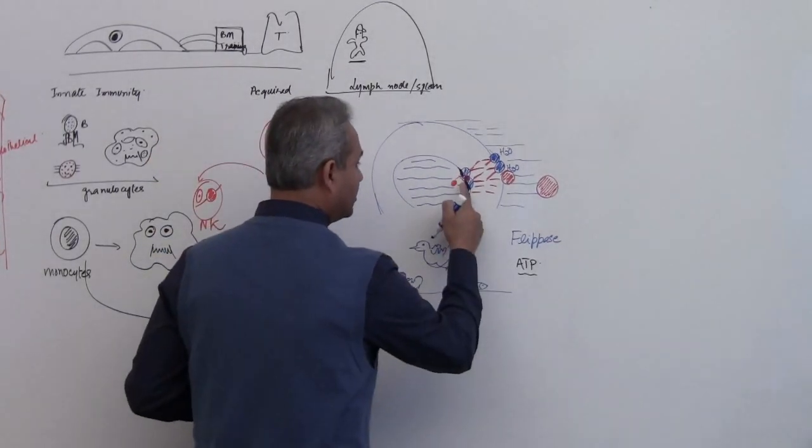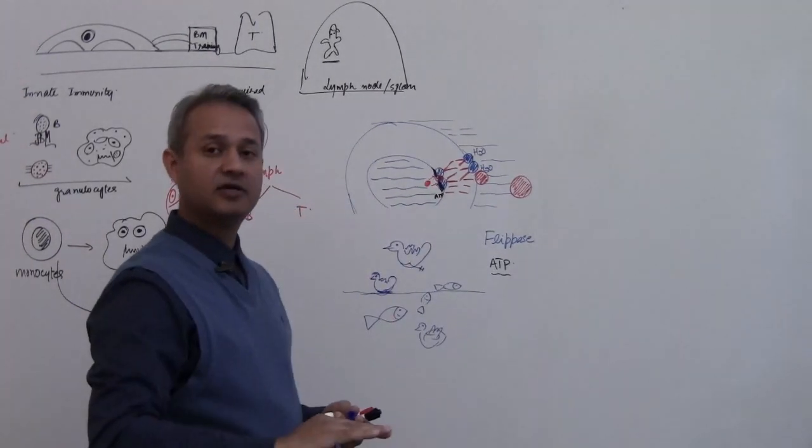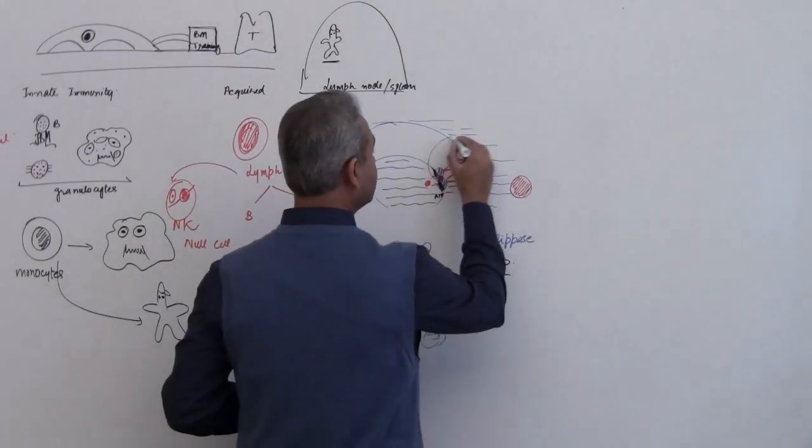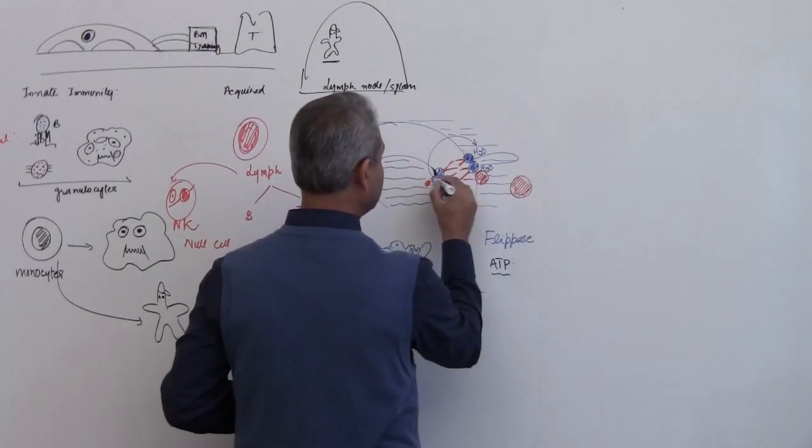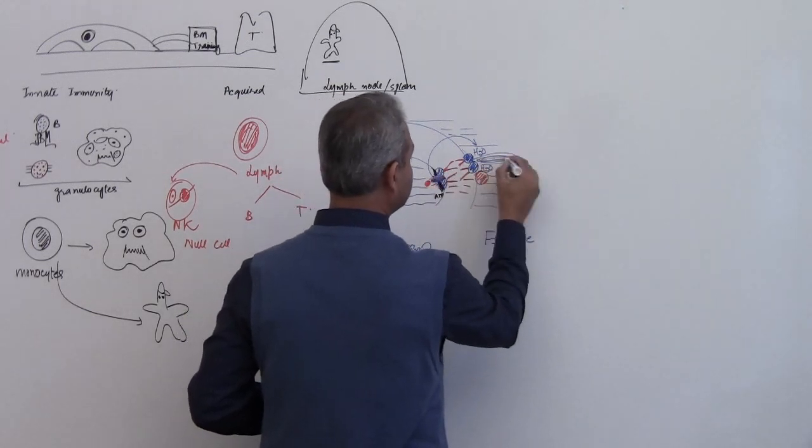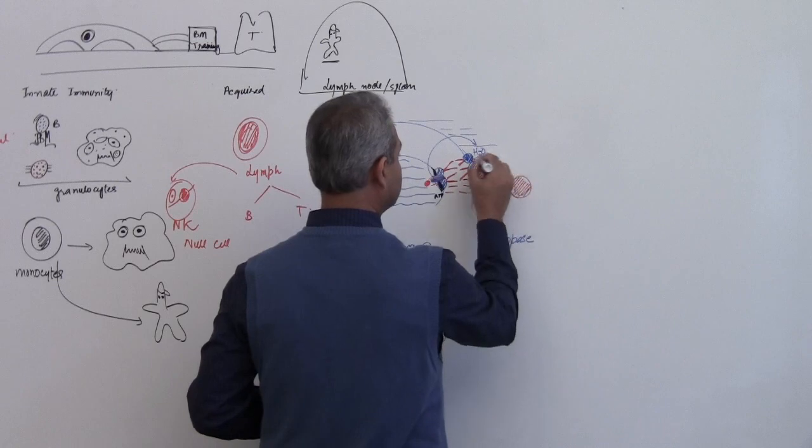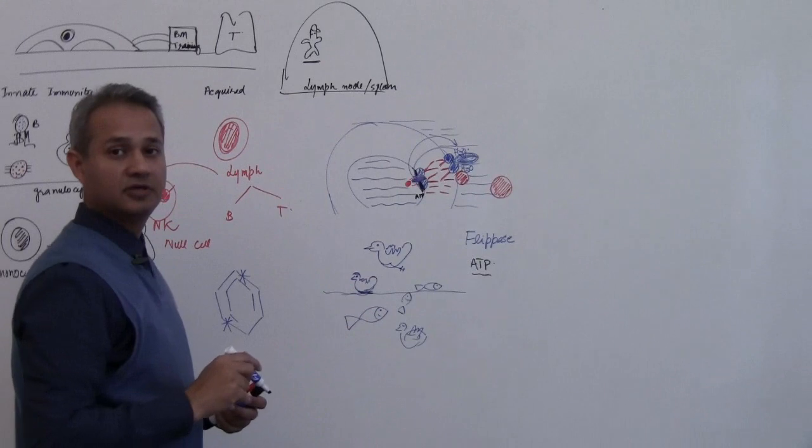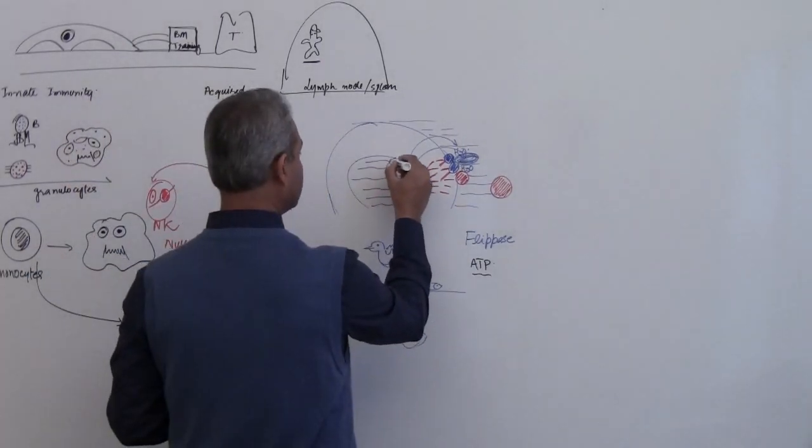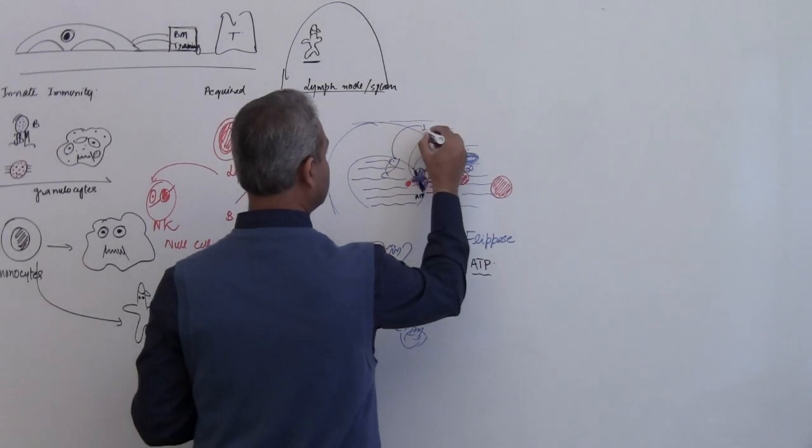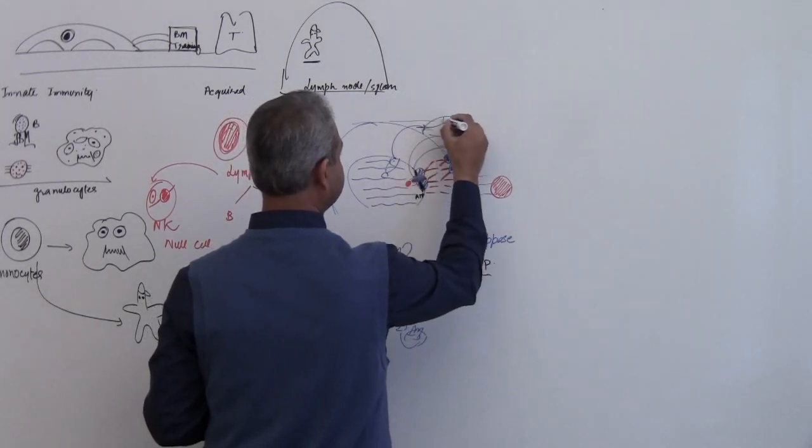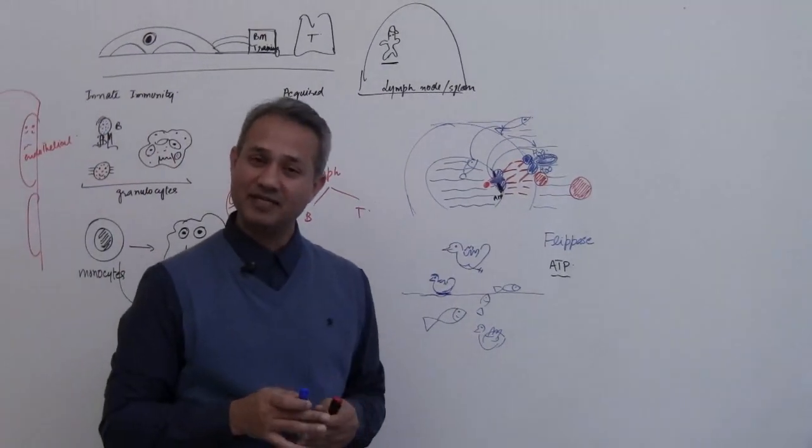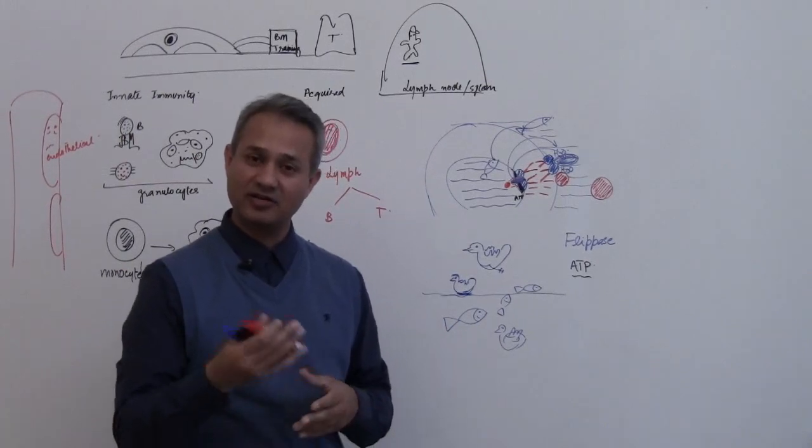So whenever a protein which is supposed to stay in, and flippase is using energy to keep it in, finally turns on the outer side. Let's say this protein which was supposed to be in is found out here. This is that fish which was here, this fish appeared on the outside.